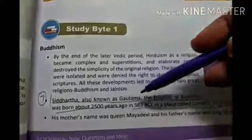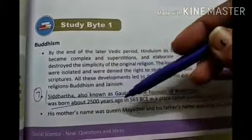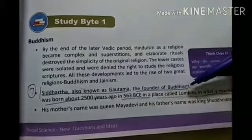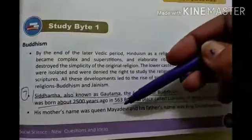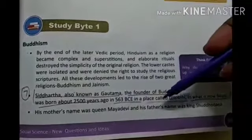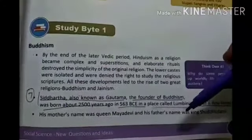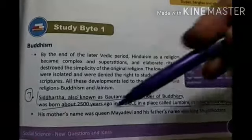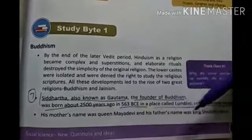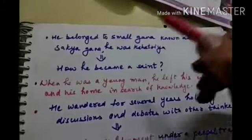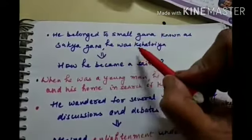Siddhartha, also known as Gautama, was the founder of Buddhism. He was born about 2500 years ago in 563 BC in a place called Lumbini, which is now in Nepal. His mother's name was Queen Mayadevi and his father's name was King Shuddhodan. He belonged to a small Gana — the Sakya Gana — and he was a Kshatriya.